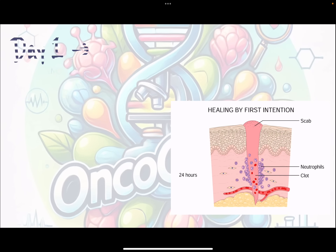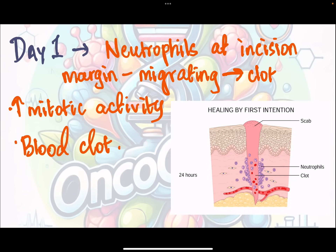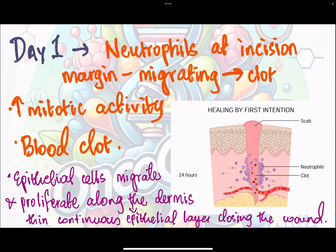On day one, neutrophils appear at the incision margin and migrate towards the clot. There is increased mitotic activity and the blood clot continues to grow. Epithelial cells migrate and proliferate along the dermis, forming a thin continuous epithelial layer which starts closing the wound. So on day one: neutrophils, increased mitotic activity, blood clot, and epithelial cell migration.